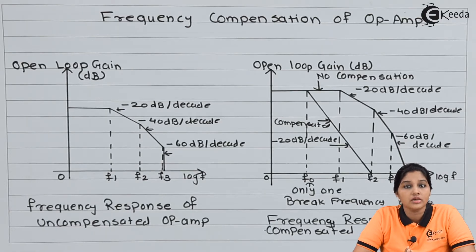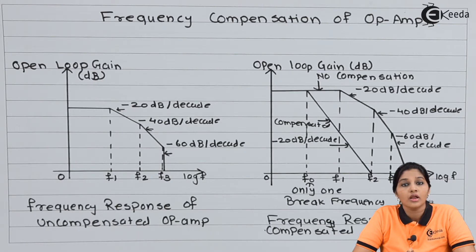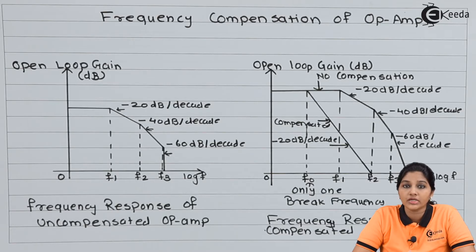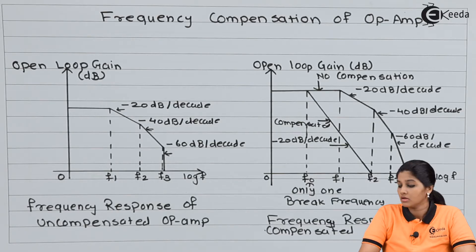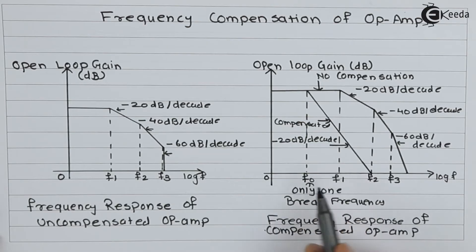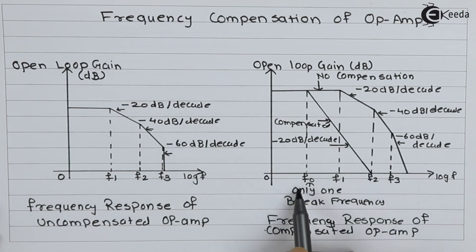In case of op-amp 741C, an internal capacitor of 30 picofarad is used in order to achieve only one break frequency. If we look at the frequency response of the compensated op-amp, we have f0 as the only one break frequency. Therefore, the multiple break frequencies are converted into one break frequency f0, which makes the circuit compensated.